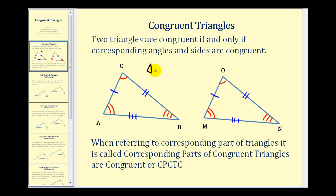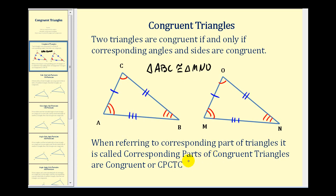In this case, triangle ABC is congruent to triangle MNO. The order in which we list these vertices is important. Vertex A corresponds to vertex M, vertex B corresponds to vertex N, and vertex C corresponds to vertex O. When referring to corresponding parts of triangles, it is called corresponding parts of congruent triangles are congruent, or for short, CPCTC.